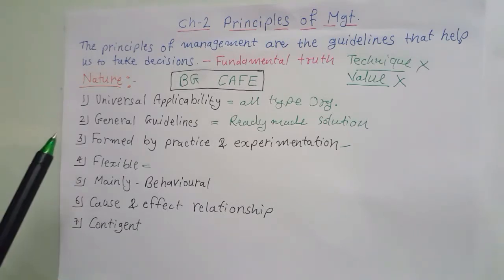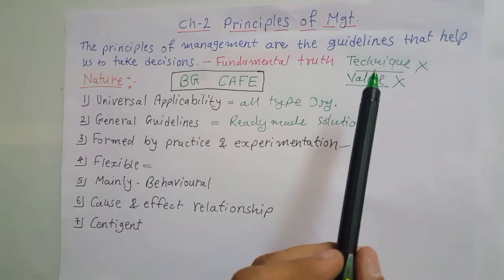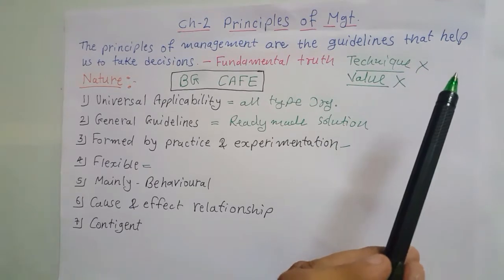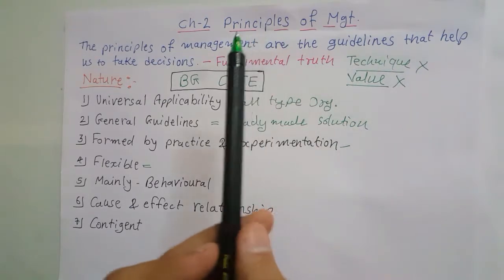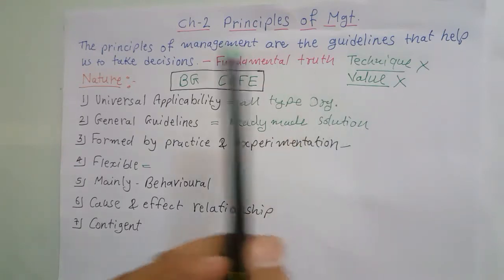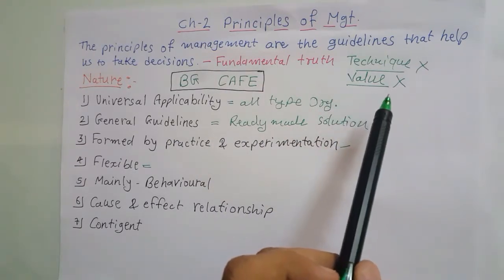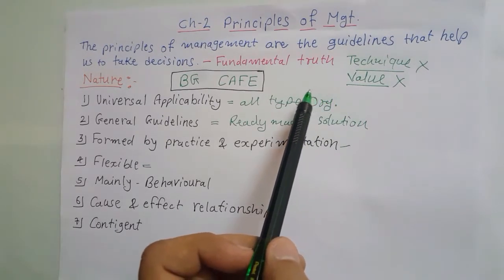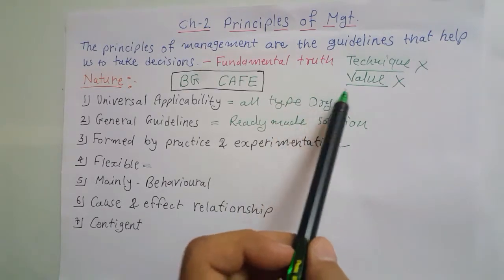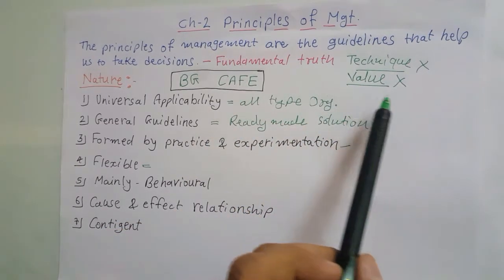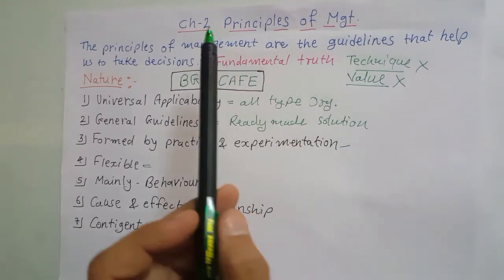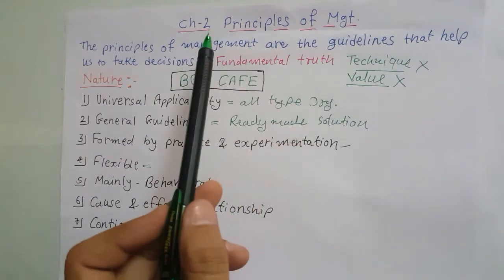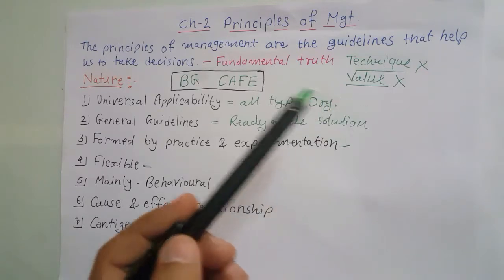Now before understanding the nature, note that principles of management are not a technique, because a technique includes steps or procedures to achieve organizational goals. These principles are also not a moral value. It is not related with any value or moral value, because moral value is one of the accepted or desirable human behaviors. So principles of management have a different meaning from both technique and moral values.